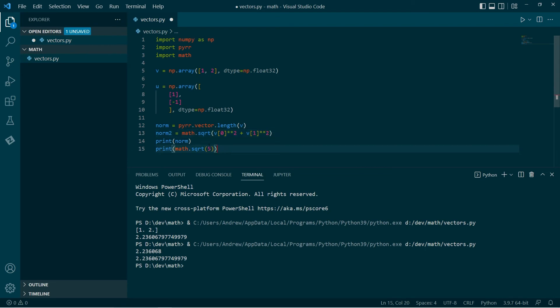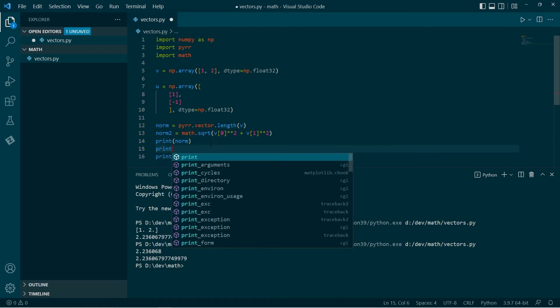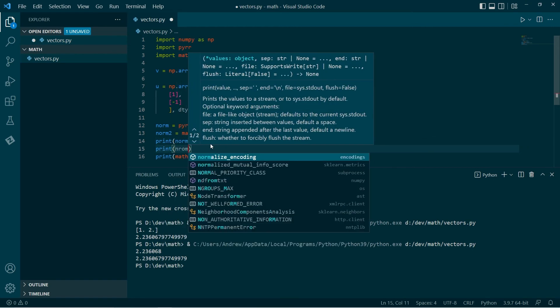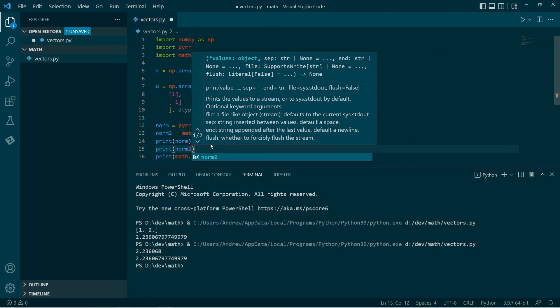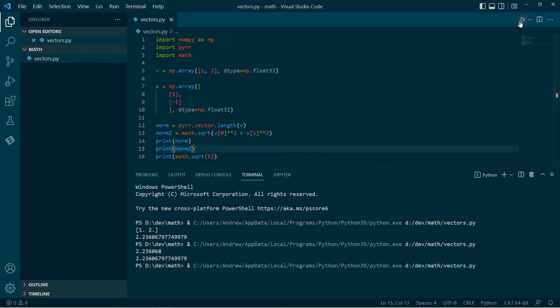And then if we have a larger vector, we'll just do more of that. So let's go ahead and print norm 2. And we have it. We're getting the same thing.